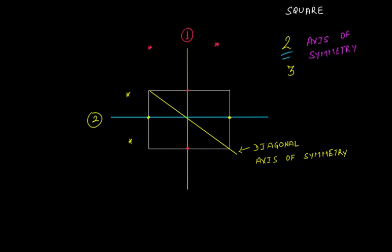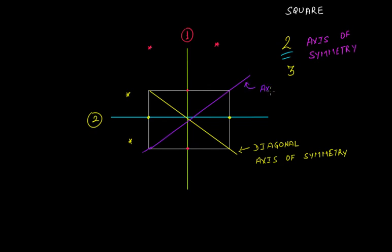Now we have three axes of symmetry. In the same way, we will have one more axis of symmetry — the other diagonal. Just focus on this line and forget about all the other three lines. If you look at this equal half and this equal half, are these mirror images? Yes, because when you fold the square around its diagonal, the two halves simply overlap with each other, making them mirror images. Therefore, this is another axis of symmetry, giving us a total of four axes of symmetry in the case of a square.